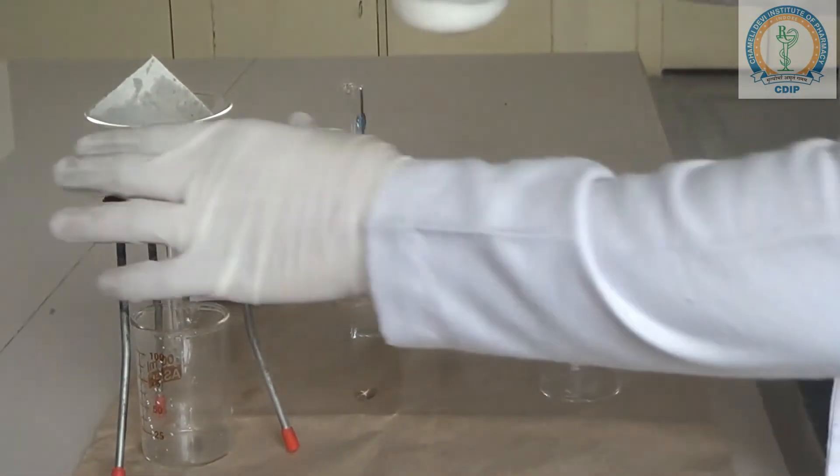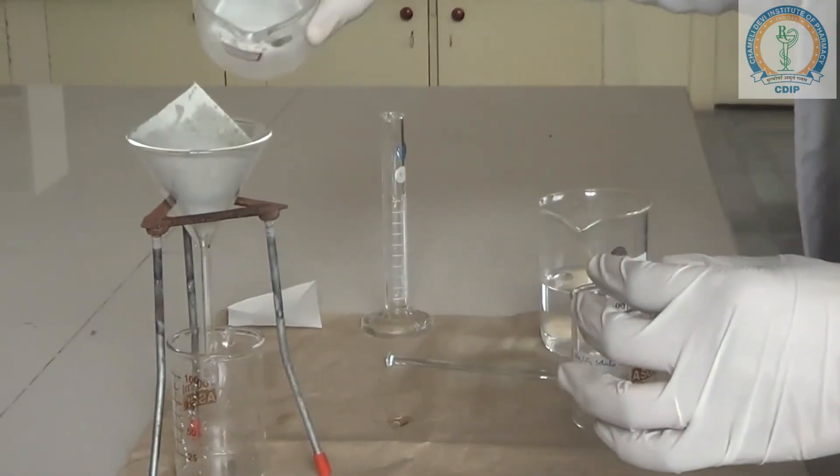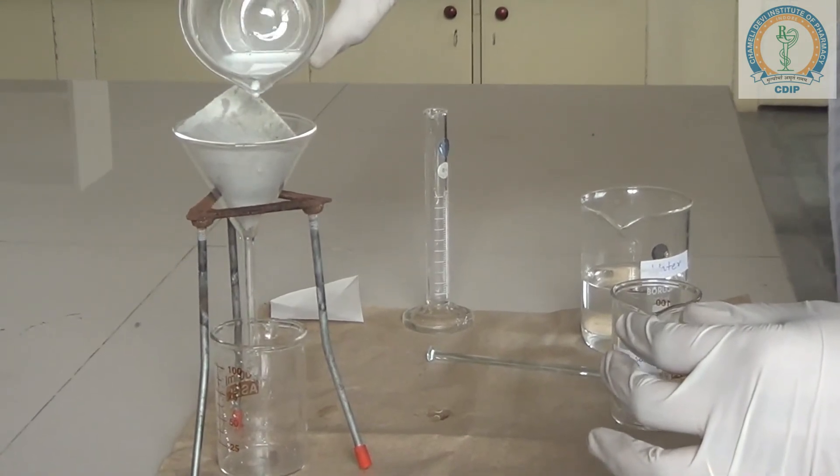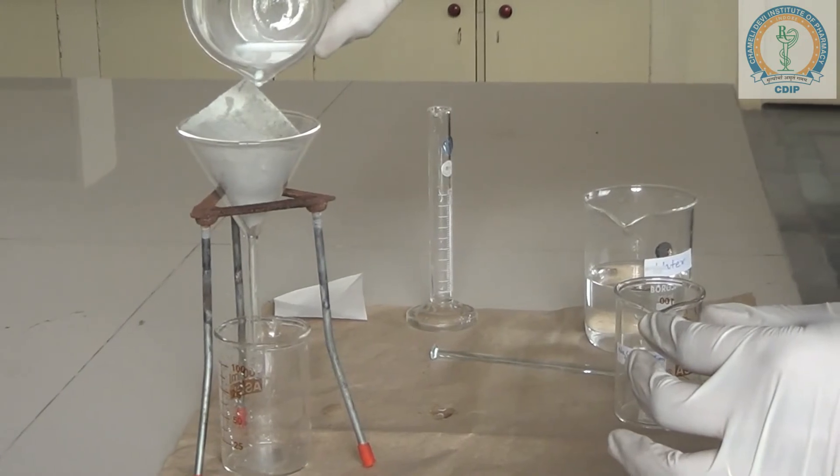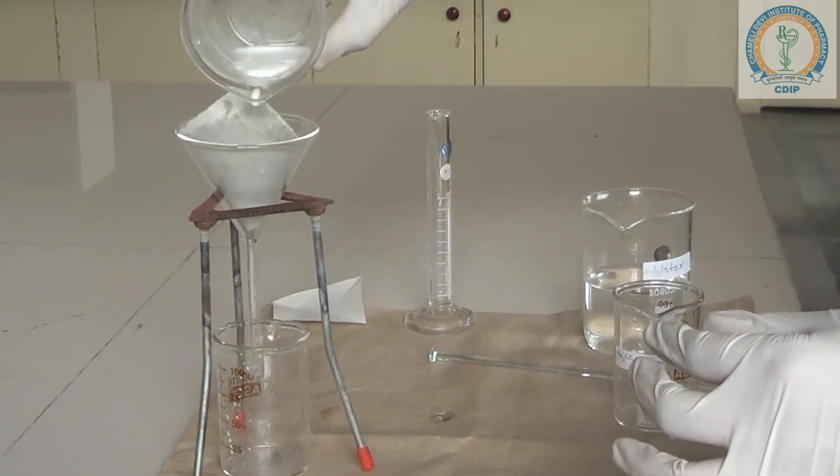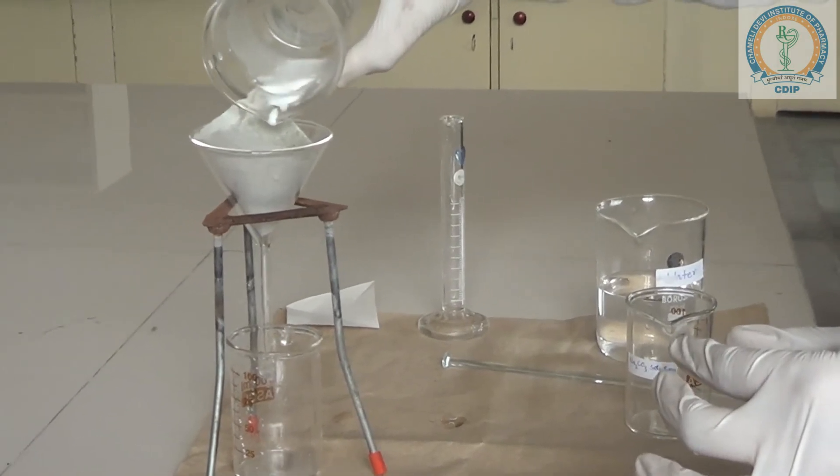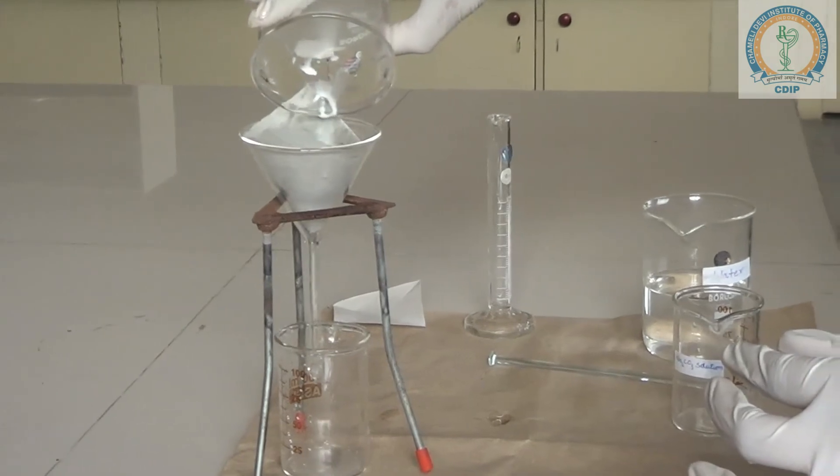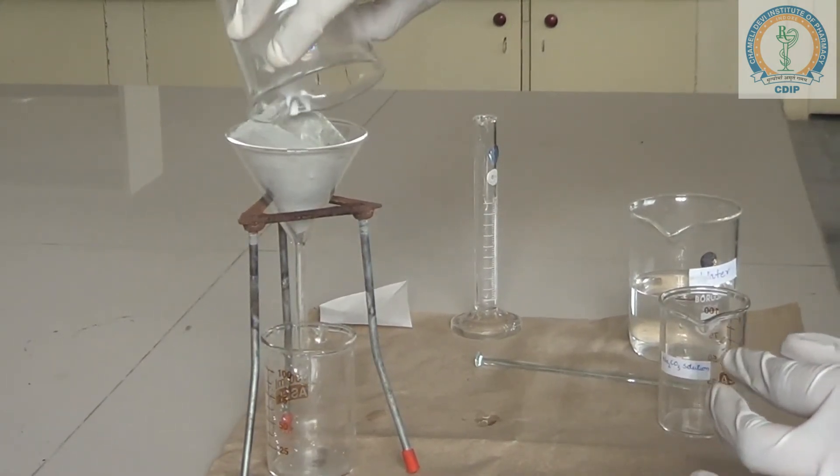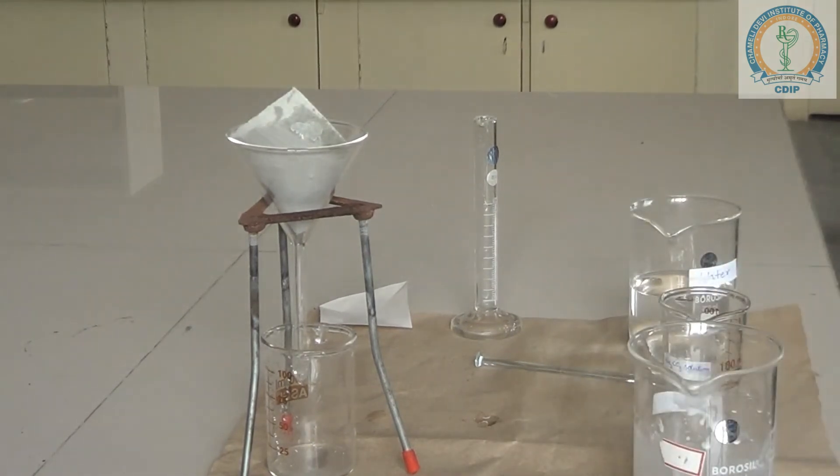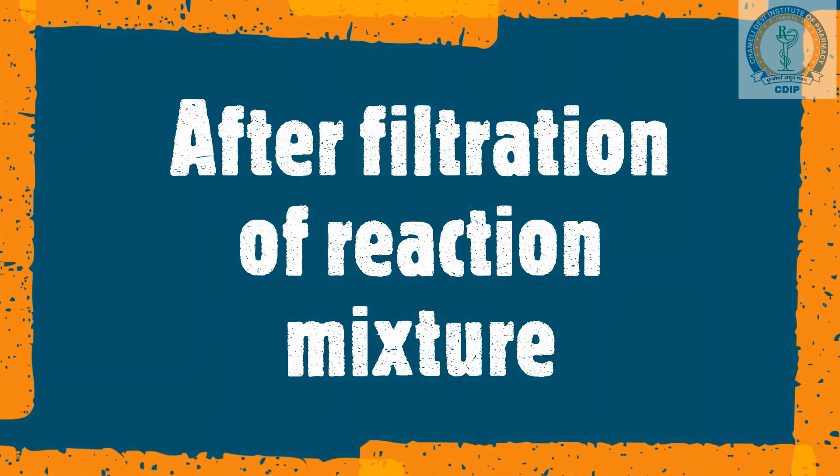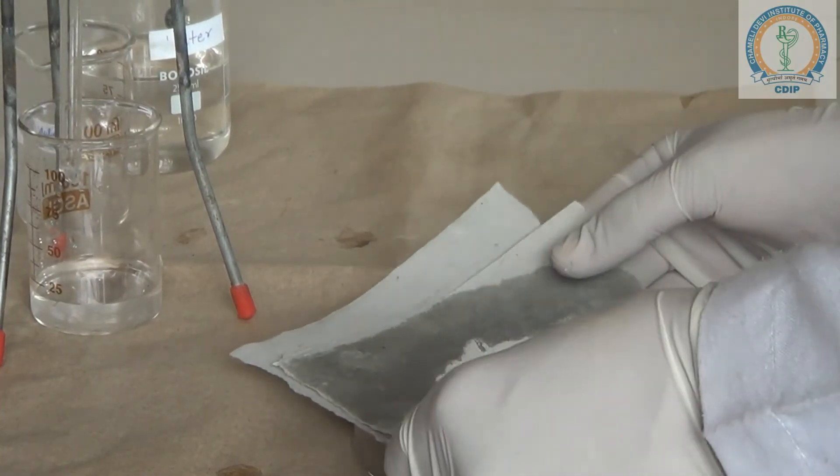Now we are going to filter this solution of calcium carbonate. So this is the preparation of calcium carbonate. Our calcium carbonate is prepared and after the filtration you will have to air dry it. So this is our required calcium carbonate powder.